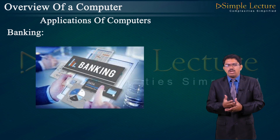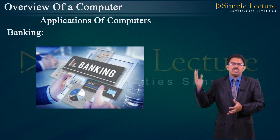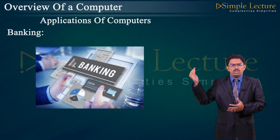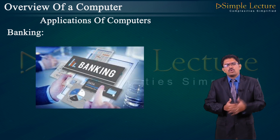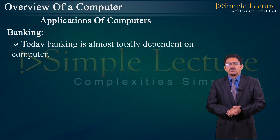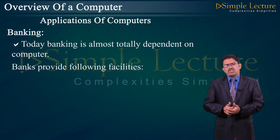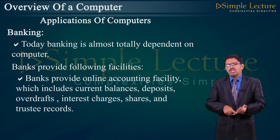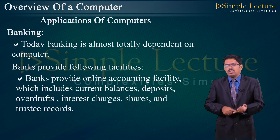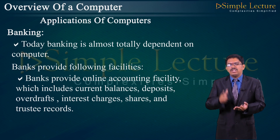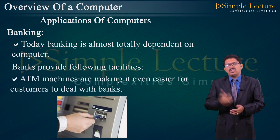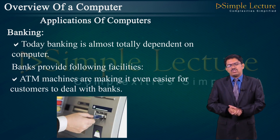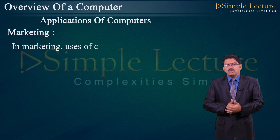For example, State Bank of India has a server in Chennai, and all sub-branches located in Bangalore, Kanyakumari, or Tamil Nadu send requests to that server so information can be easily shared. Today banking is almost totally dependent on computers. Banks provide online accounting facilities including current balance, deposits, overdraft, interest charges, shares, and trustee records. ATM machines make it even easier for customers to deal with banks.